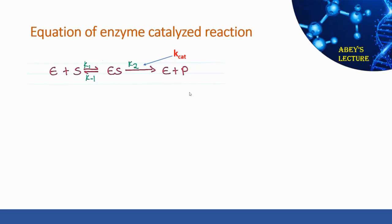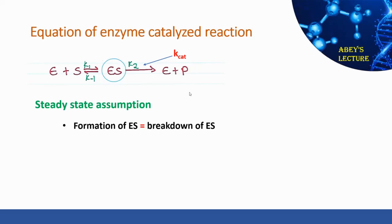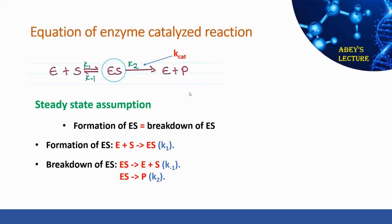To understand the Michaelis-Menten equation, it is important to understand the steady-state assumption. The steady-state assumption states that the formation of the enzyme-substrate complex is equal to the breakdown of the enzyme-substrate complex. The ES complex forms when enzyme and substrate react with rate constant k1, and breaks down in two ways: forward to product with rate constant k2, or in reverse to free enzyme plus substrate with rate constant k-1.